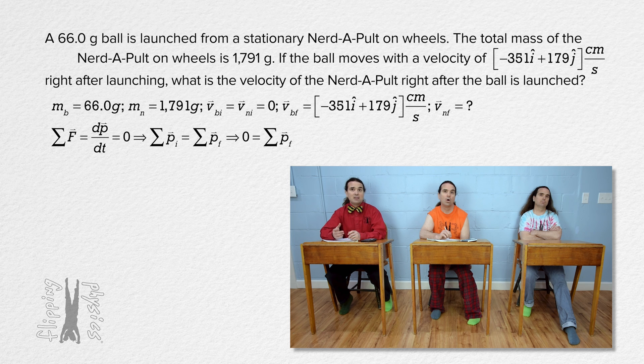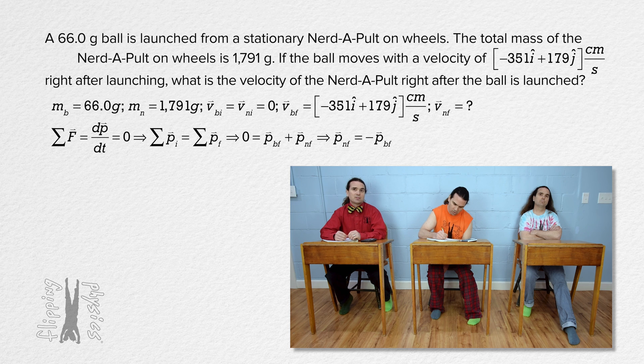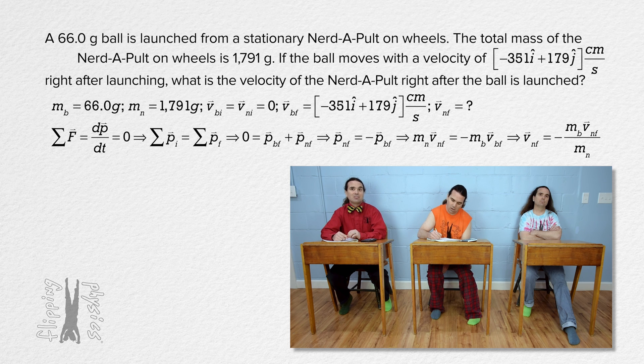The final momentum of the system is the summation of the final momentum of the ball and the final momentum of the Nerdapult. Solve for the final momentum of the Nerdapult, substitute mass times velocity in for both momenta and divide by the mass of the Nerdapult to solve for the final velocity of the Nerdapult.